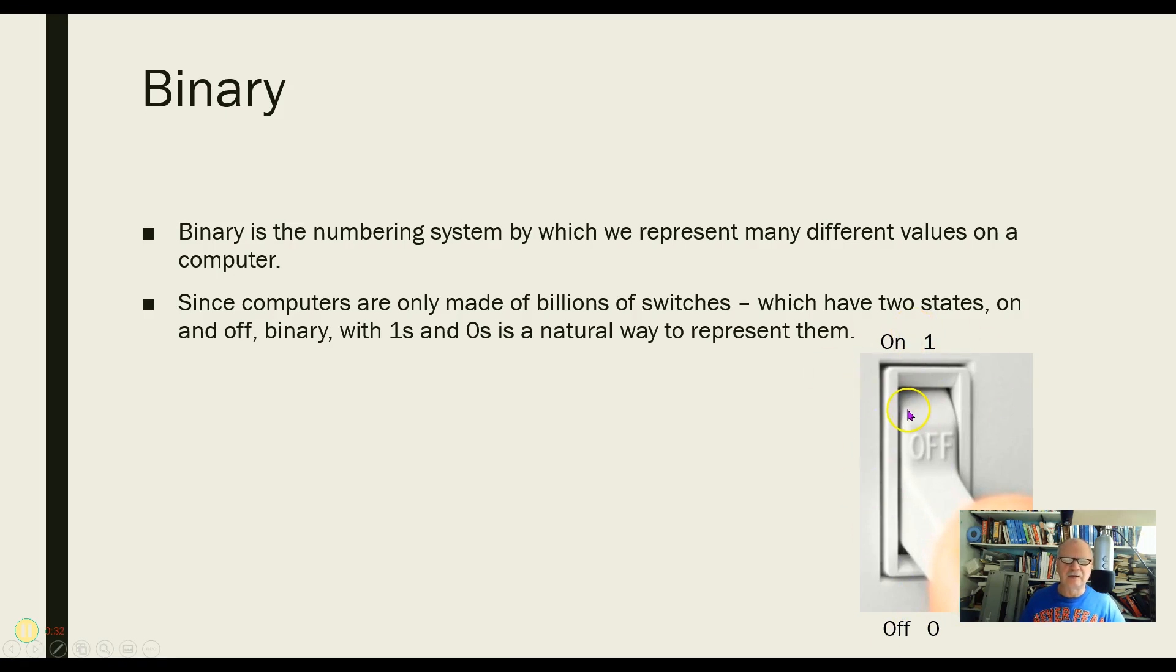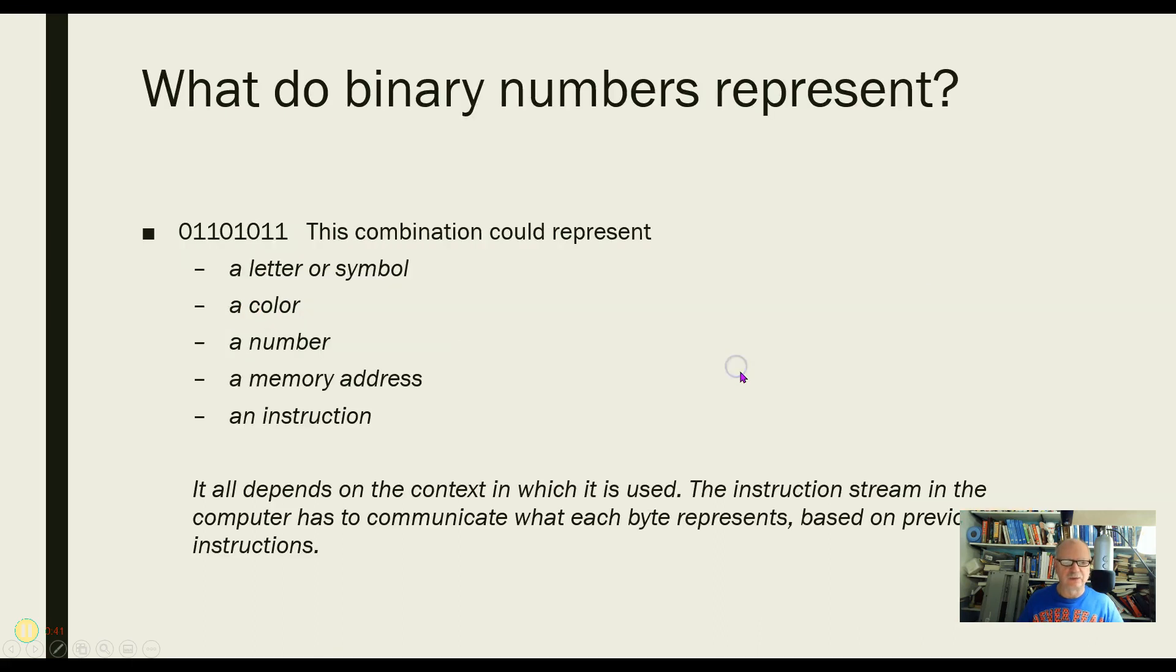So we use the binary system to represent different values in the computer by combining a bunch of ones and zeros, because we only have switches to work with. So let's take this combination of ones and zeros. What is that combination to a computer?